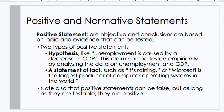Positive and normative statements. Positive statements are objective, and conclusions are based on logic and evidence that can be tested. Two types: a hypothesis — like 'unemployment is caused by a decrease in GDP,' which can be tested empirically by analyzing data — and a statement of fact, such as 'it's raining' or 'Microsoft is the largest producer of computer operating systems in the world.' Note that positive statements can be false, but as long as they are testable, they are positive.